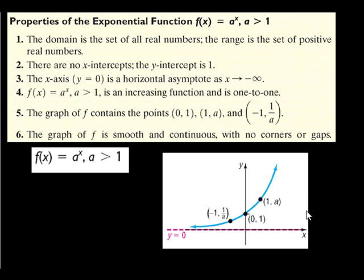There are no x-intercepts — that means this line gets closer and closer but never reaches the x-axis. The horizontal asymptote is as x approaches negative infinity, right here, so your horizontal asymptote is y = 0 or the x-axis. The graph contains the point (0, 1), (1, a), and (-1, 1/a). So when f(x) = 2^x, 2 is our a, so we would have (-1, 1/2), (0, 1), and (1, 2) all on our graph.